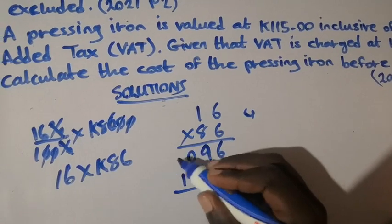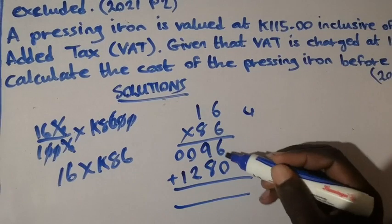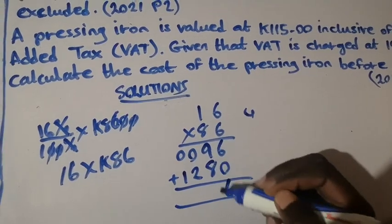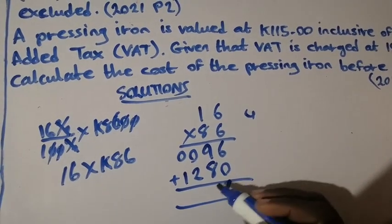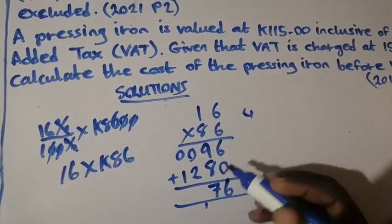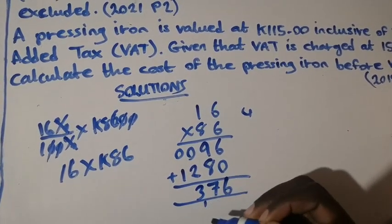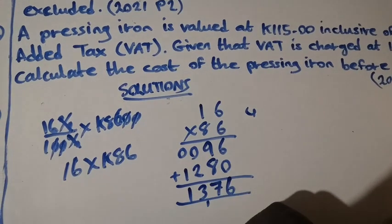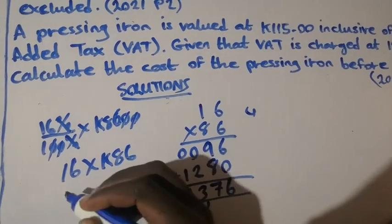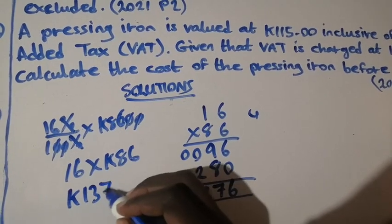You add the zeros to balance the figures. So now, 6 plus 0 is 6. 9 plus 8 is 17 — write 7, carry 1. 0 plus 2 is 2, plus 1 is 3. 0 plus 1 is 1. So if we multiply 16 by 86, we get 1,376.